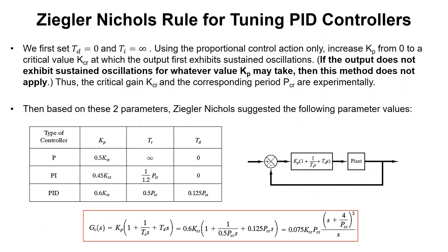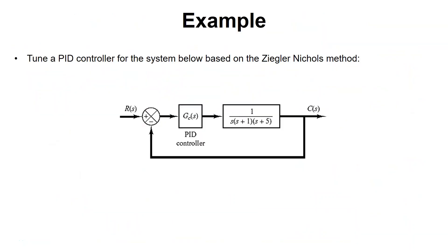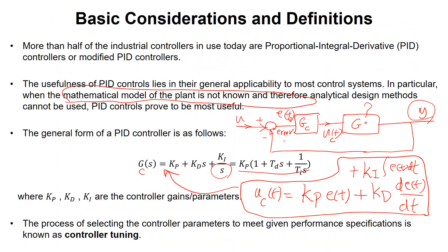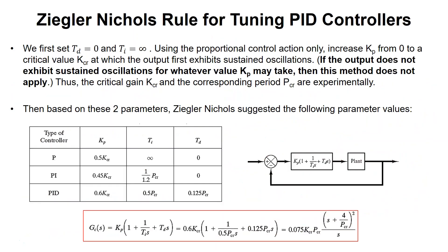One of the first questions you might ask is: how do I set these gains? If someone gives me a plant like 1/(s(s+1)(s+5)) and says tune a PID controller for specific performance characteristics — rise time, overshoot, etc. — how would you set KP, KD, and KI, or equivalently KP, TD, and TI?